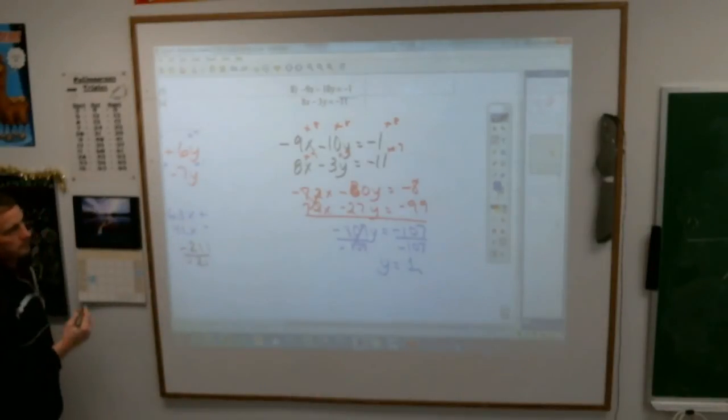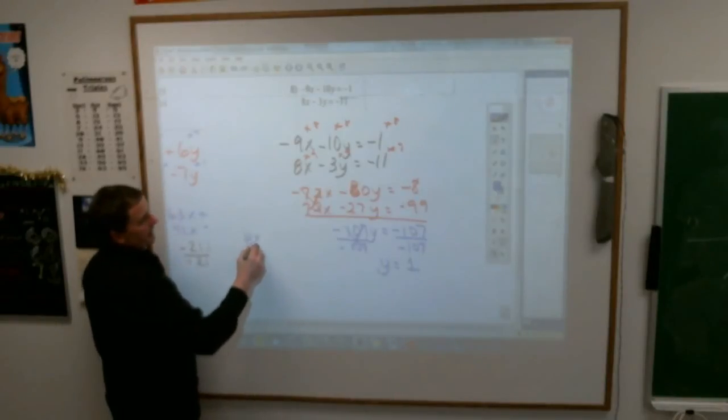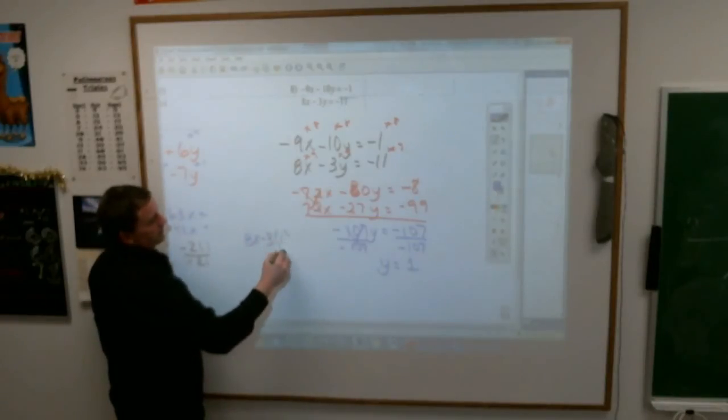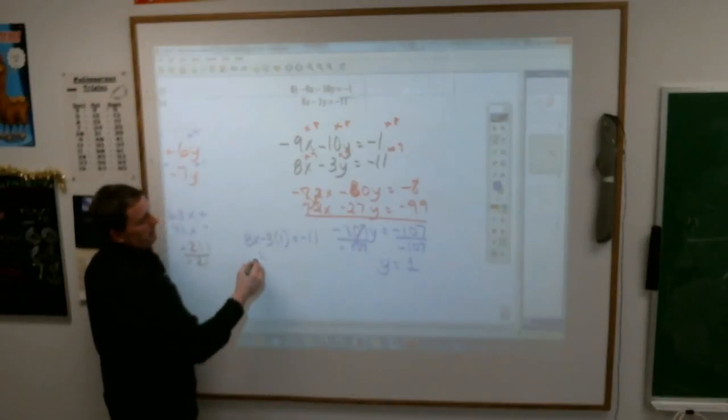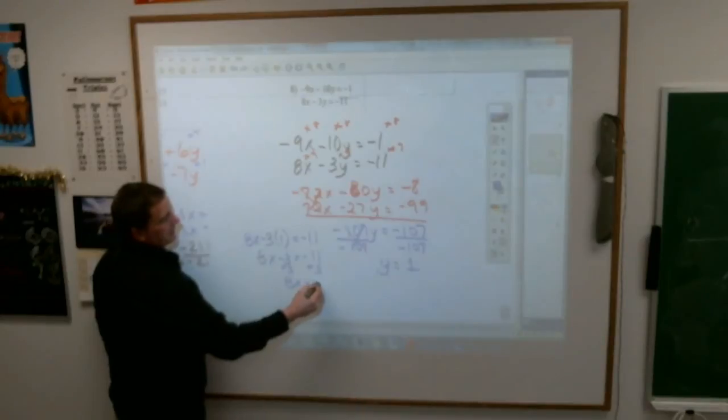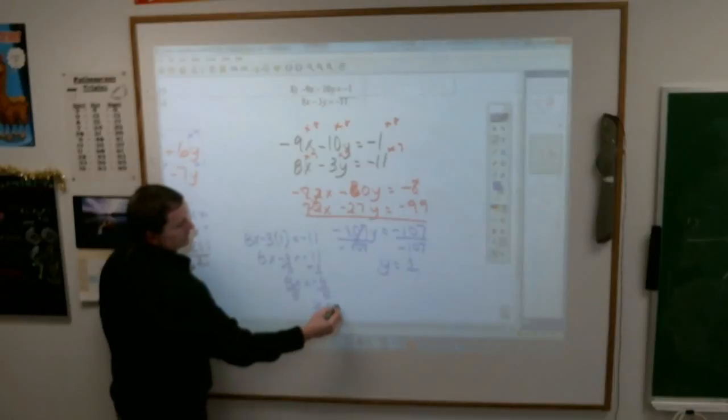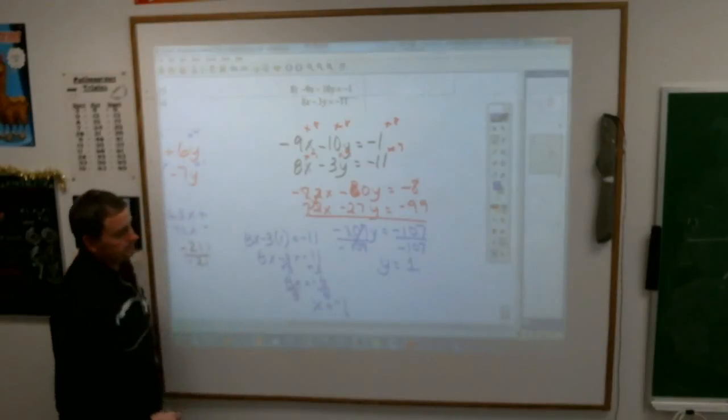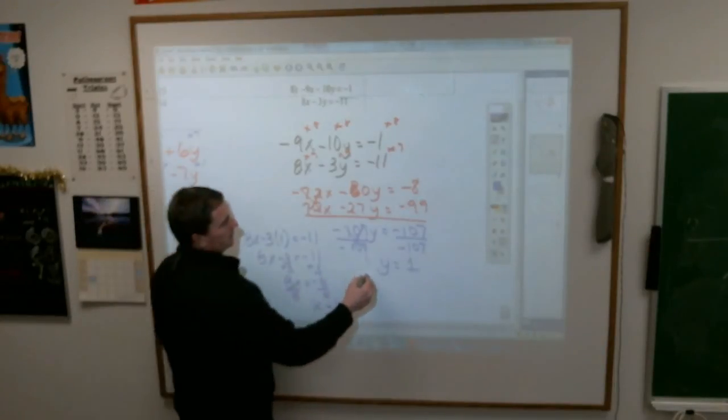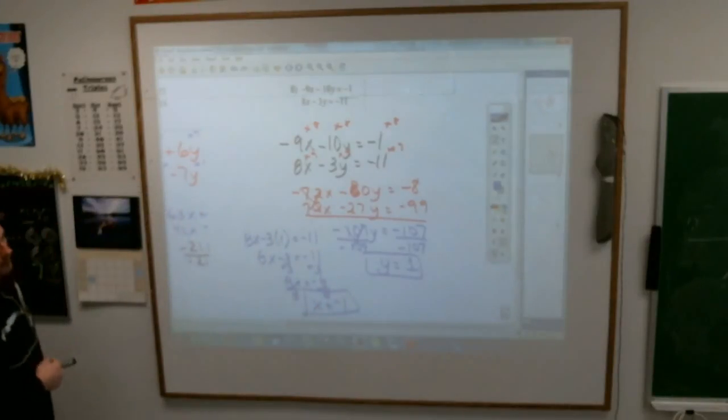So I did it. Then you put 1 in for y. It doesn't matter which one. I'll go bottom. 8x minus 3 times 1 equals negative 11. 8x minus 3 equals negative 11. Add 3. Add 3. 8x equals negative 8. Divide by 8. Divide by 8.